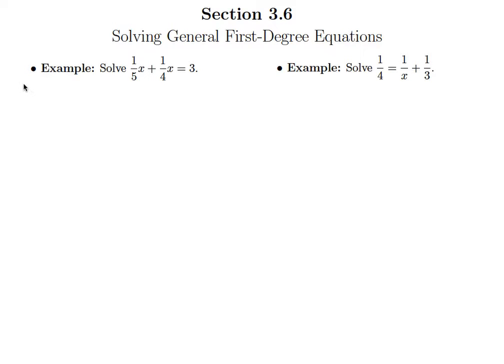So for this first example we need to first identify our least common denominator. What is the smallest number that both 5 and 4 go into evenly? Of course that would be 20.